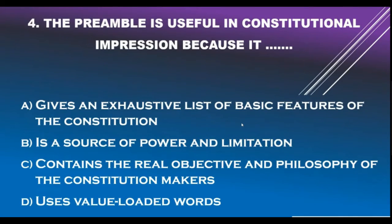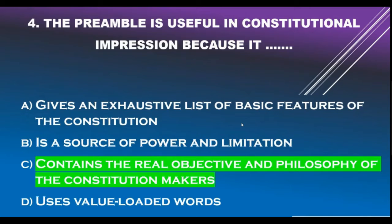Question number 4. The Preamble is useful in constitutional interpretation because: Option A - It gives an exhaustive list of basic features of the Constitution. Option B - It is a source of power and limitation. Option C - It contains the real objective and philosophy of the Constitution Makers. Option D - It uses value-loaded words. Correct answer is Option C: It contains the real objective and philosophy of the Constitution Makers.